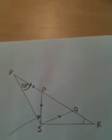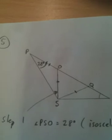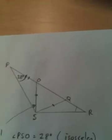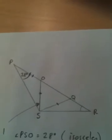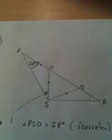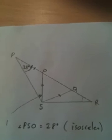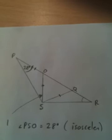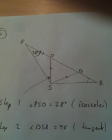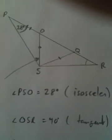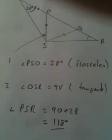A couple different ways of doing it. This is the way that I've chosen. First step, I'm going to use the fact that OP and OS are both the radii of the circle, which makes triangle OPS isosceles. So, PSO will be 28 degrees. I also know that OSR will be a right angle, as RS is a tangent of the circle, so it's 90 degrees there. So, angle PSR, that would be the 90 add the 28, that would be 118.